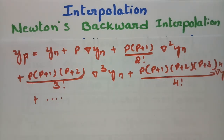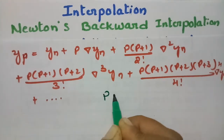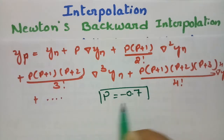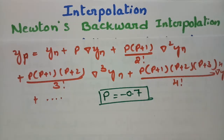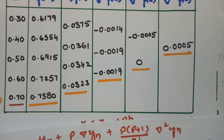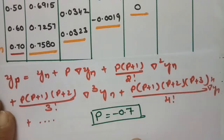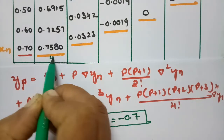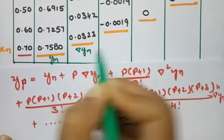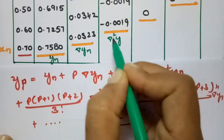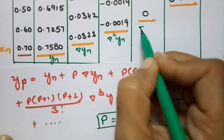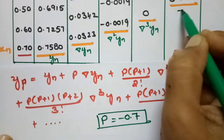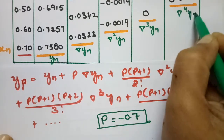In this formula I have to substitute all the values. Our p value is −0.7. We have to substitute all the backward values: y_n = 0.7580, ∇y_n = 0.0323, ∇²y_n = −0.0019, ∇³y_n = −0.0019, and ∇⁴y_n = 0.0005.